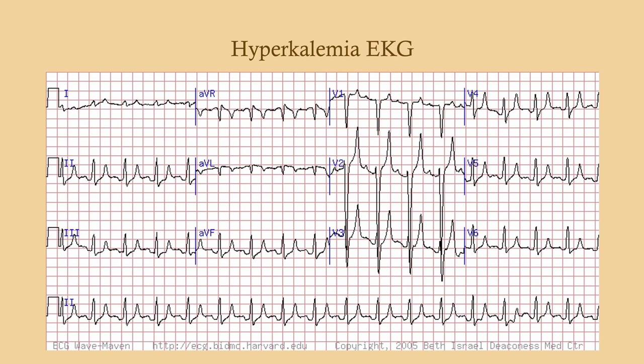This is an EKG showing hyperkalemia. Generally with these limb leads, we don't want the T-wave amplitude to be more than two big boxes. As you can see here, this T-wave is about three and a half big boxes. Look for heightened T-wave amplitude — that is the classic EKG change consistent with hyperkalemia.